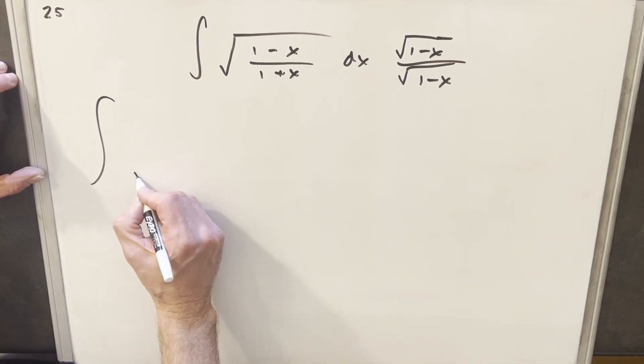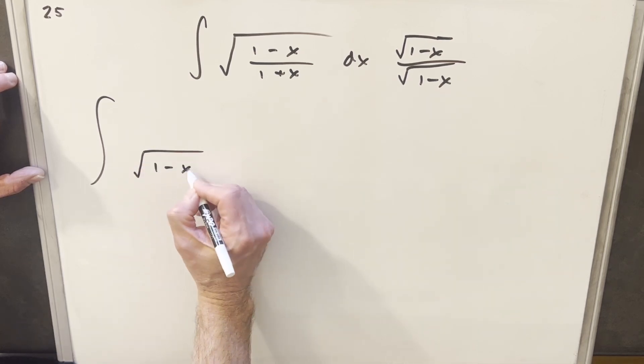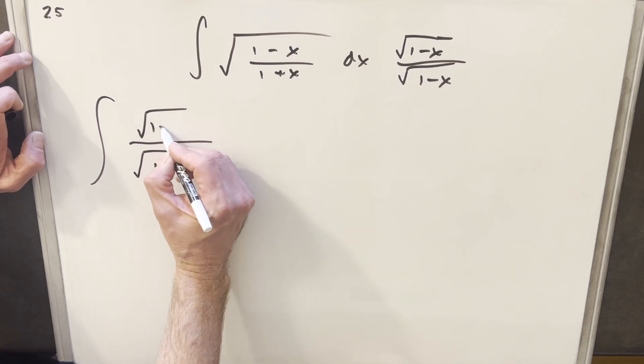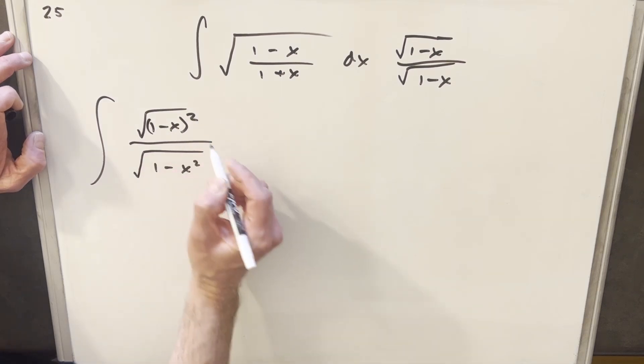When we multiply this out in the denominator, we're going to have 1 minus x squared. In the numerator, we're going to have square root of 1 minus x all squared. But what we can do is rewrite that as the absolute value of 1 minus x.